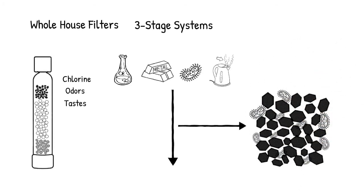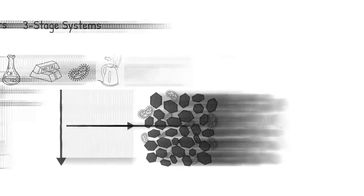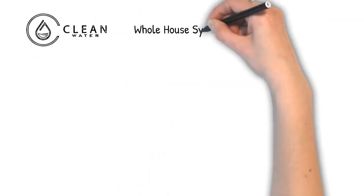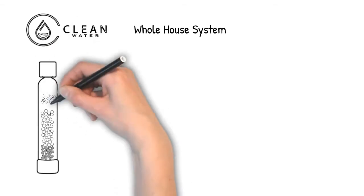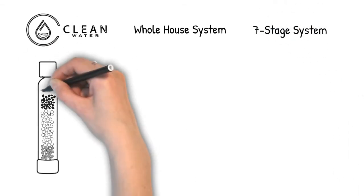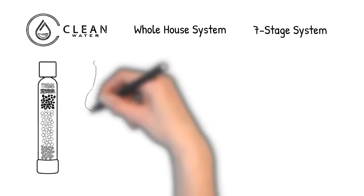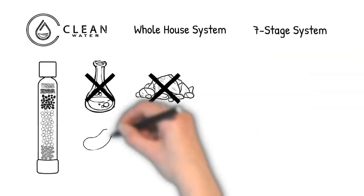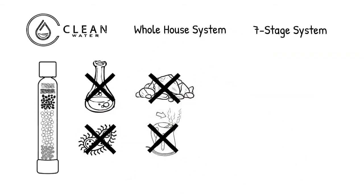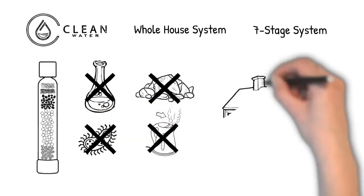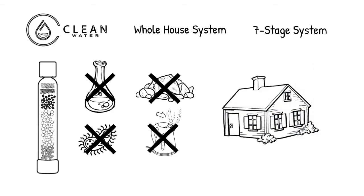The Clean Water Company whole house filter is a specifically designed seven-stage system with the addition of four stages of KDF. These seven stages working together filter all contaminants, chemicals, minerals, microorganisms, and VOCs, providing safe water to your entire home.